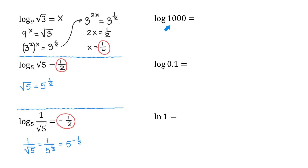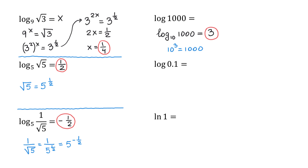In the next example, we have log 1000. Notice that in this logarithm, the base is missing. That is because this is a special logarithm called common logarithm where the base is 10. So, we can rewrite it as log base 10 of 1000, but in general, when we have a common logarithm, we don't write the base 10. Now, let's evaluate it: 10 to what power equals 1000? That would be 3, because 10 times 10 times 10 makes 1000.